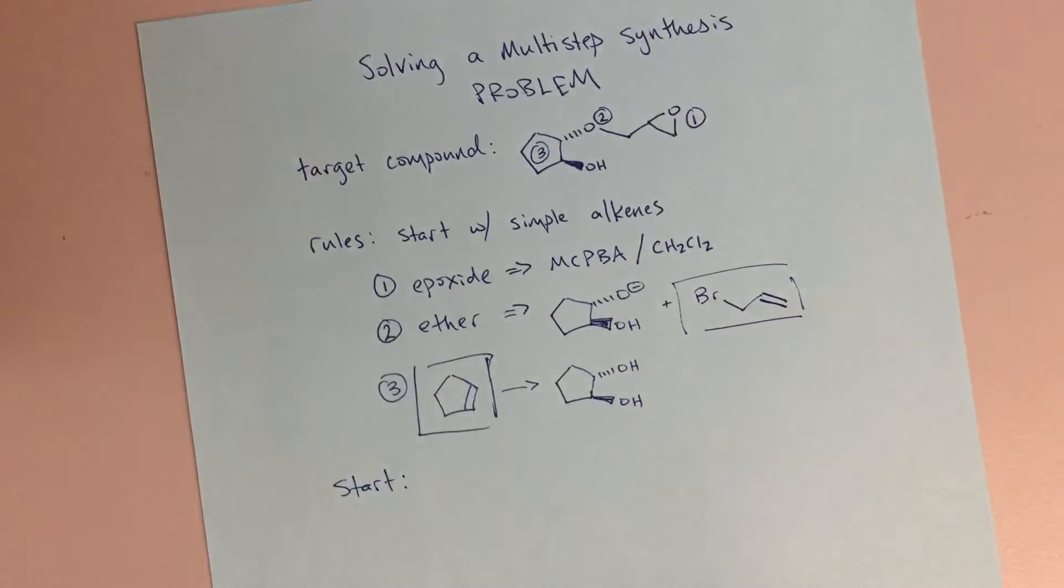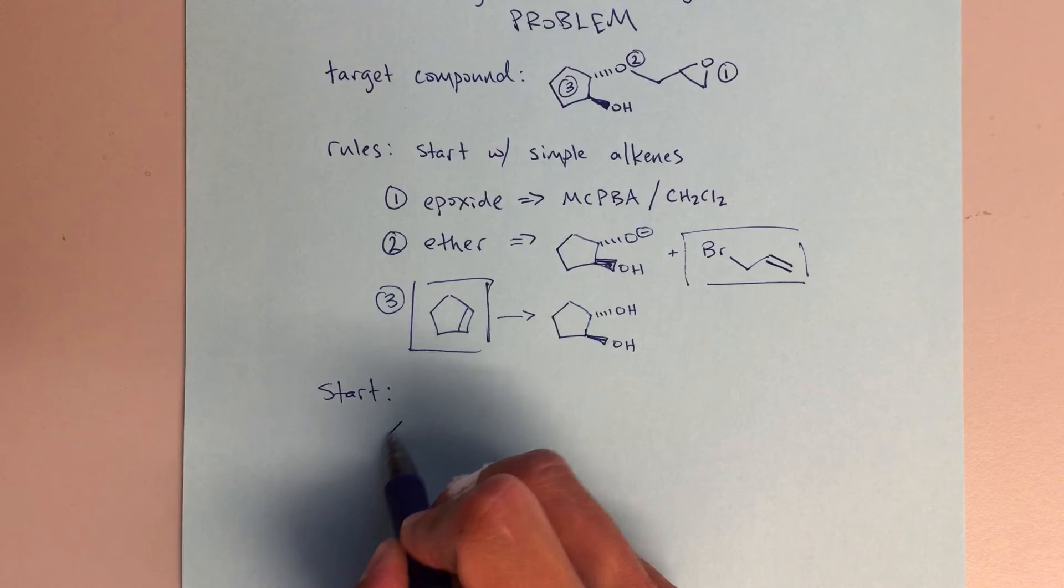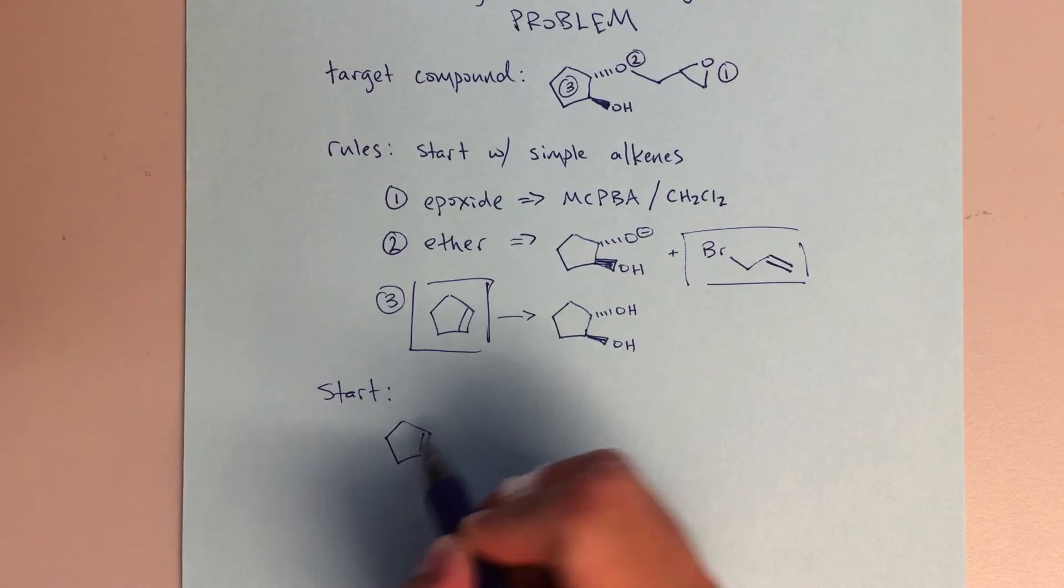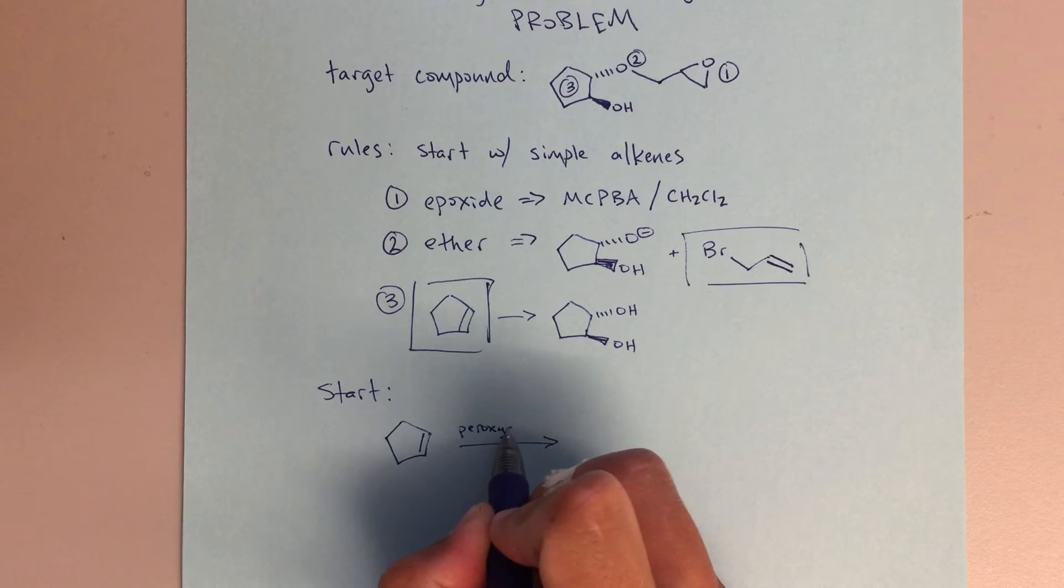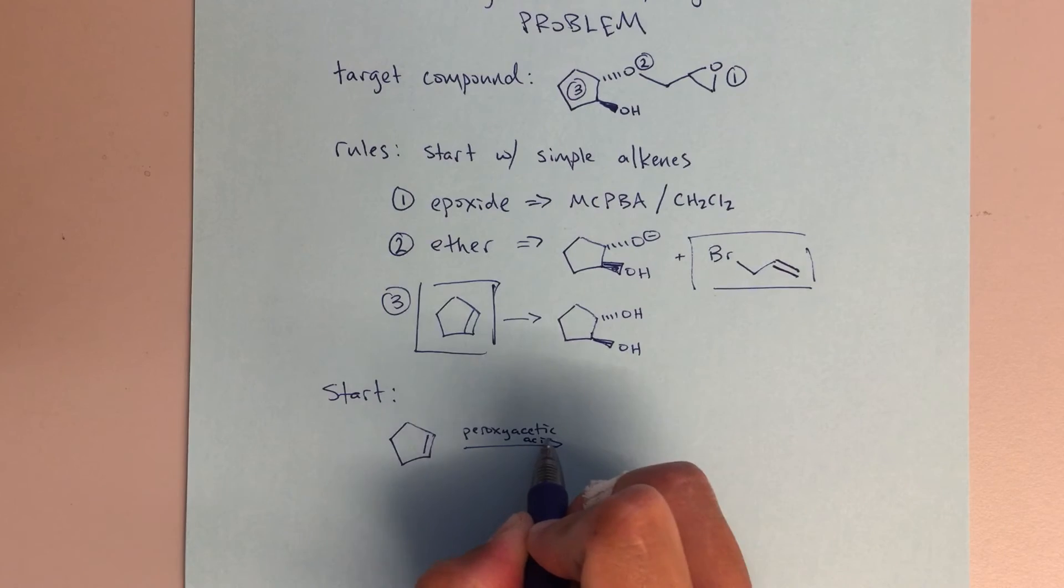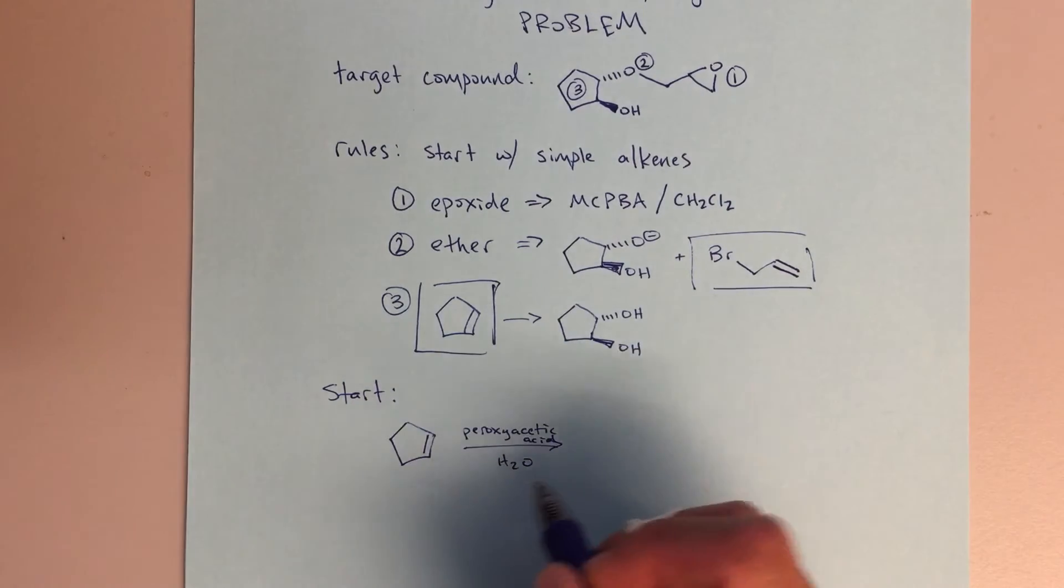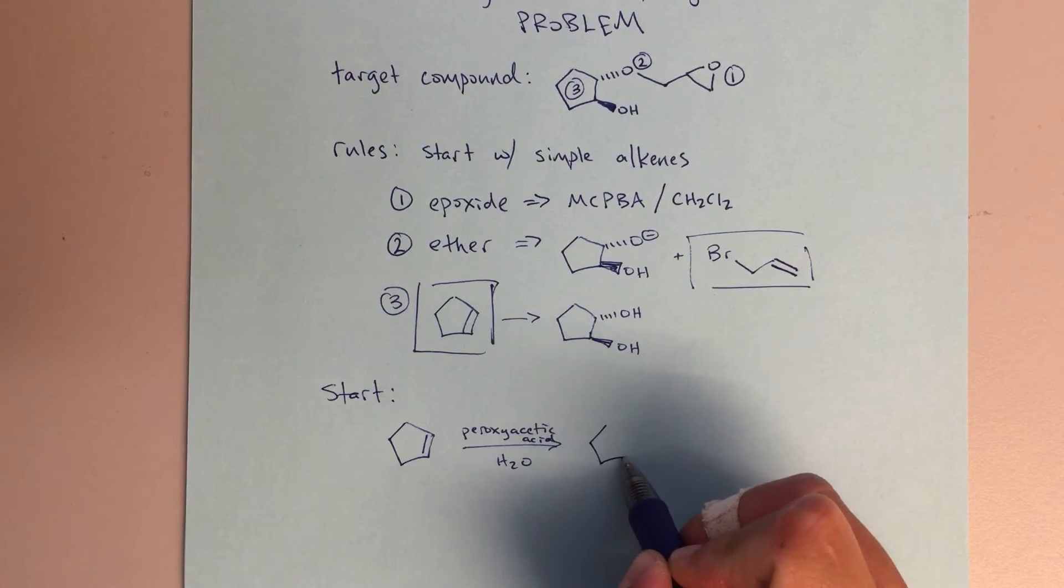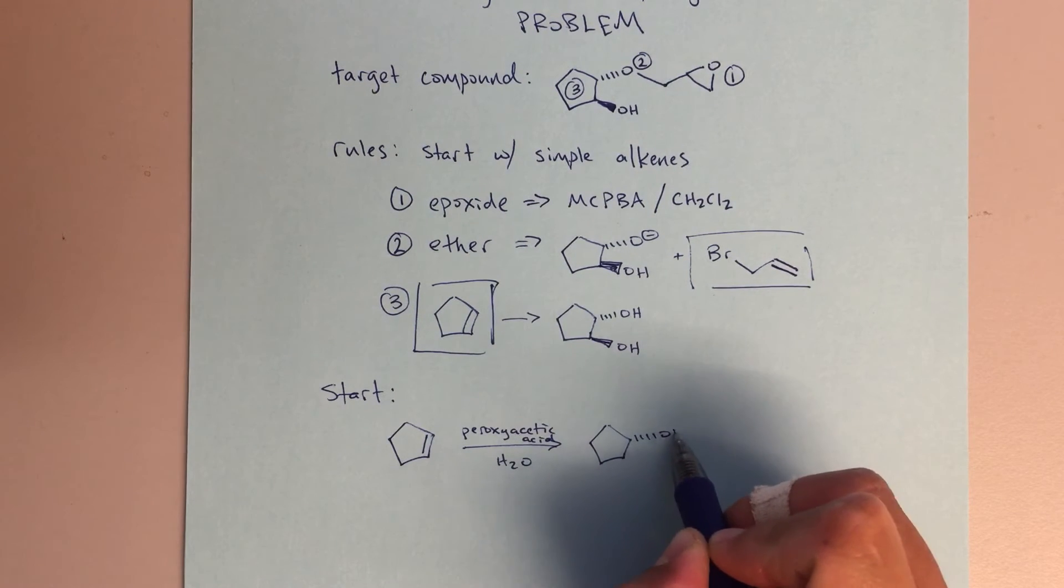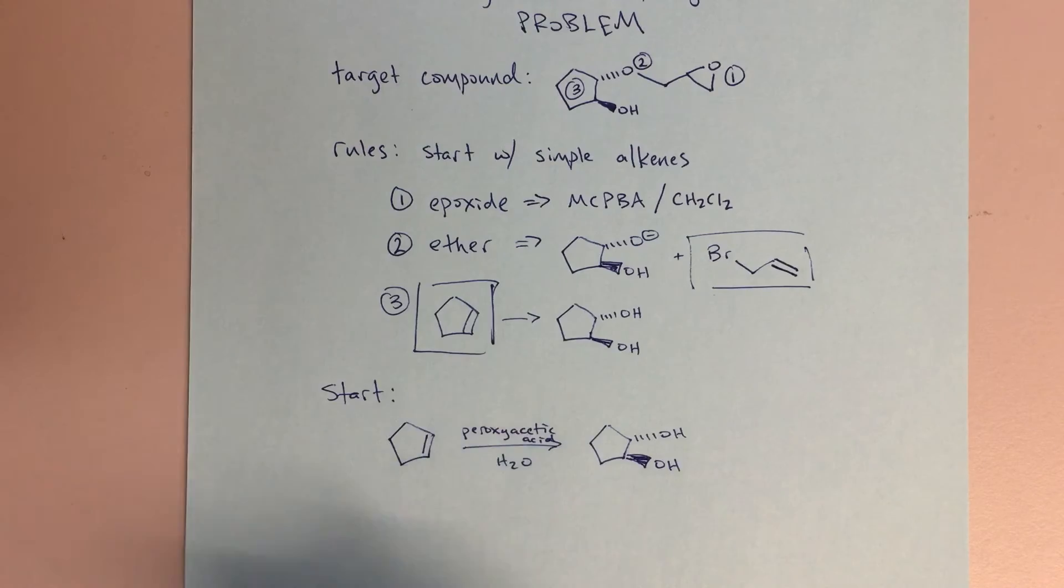The first thing that I'm going to do is take my cyclopentene and react that with some peroxy acid, so we can just write peroxyacetic acid, and then we'll do that in water. If we do that in water or H3O+ or H+, any of those are going to lead us to this ring-opened epoxy, excuse me, diol product. We're going to form the epoxide first with peroxyacetic acid, then we're going to do acid-catalyzed ring opening to form our diol product.